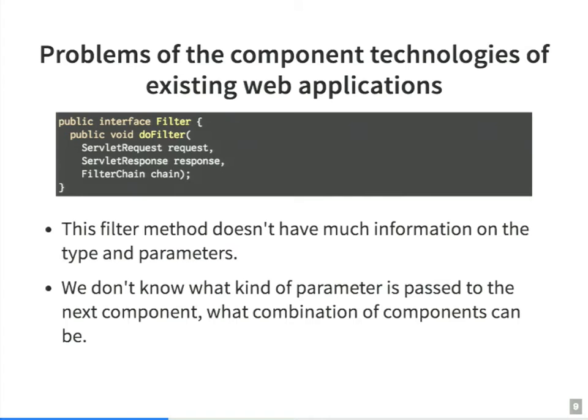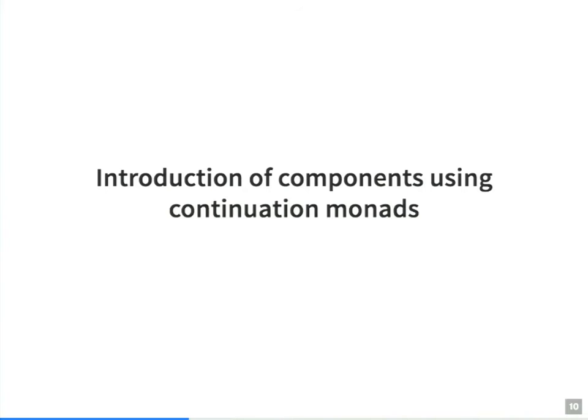Let's look at the Java code again. This filter method doesn't have much information on type and parameters. We don't know what kind of parameters are being passed to the next component, or what combinations of components are valid. So we introduce components of application using continuation monads.